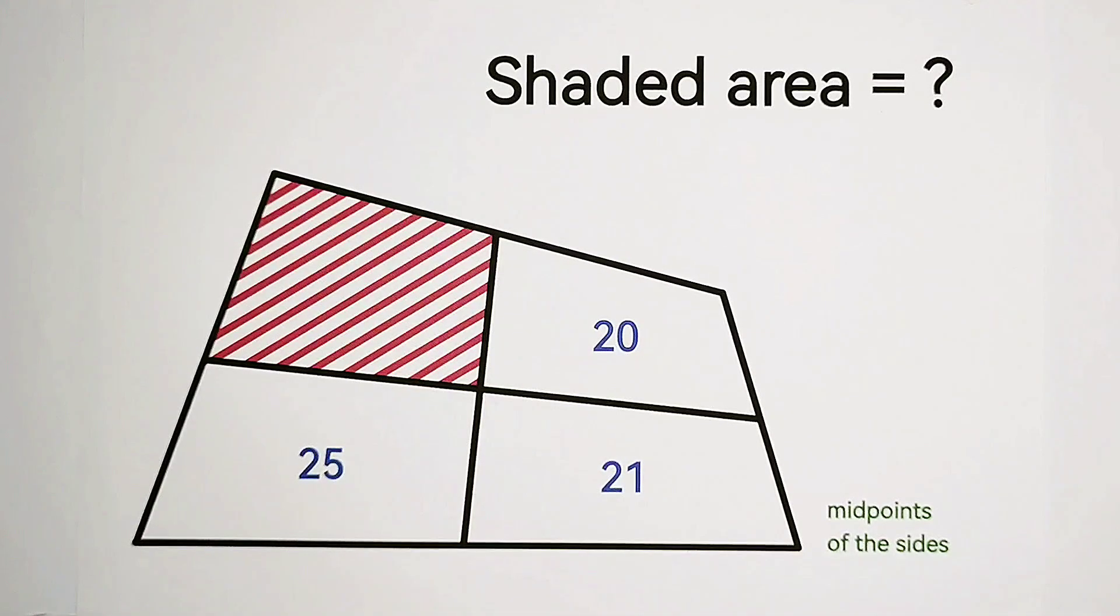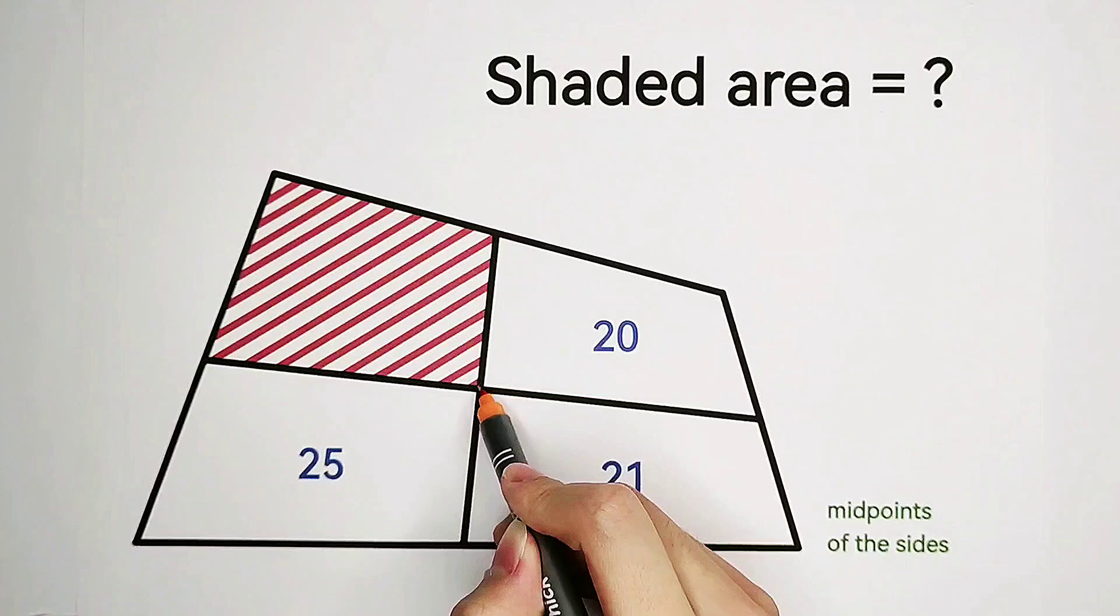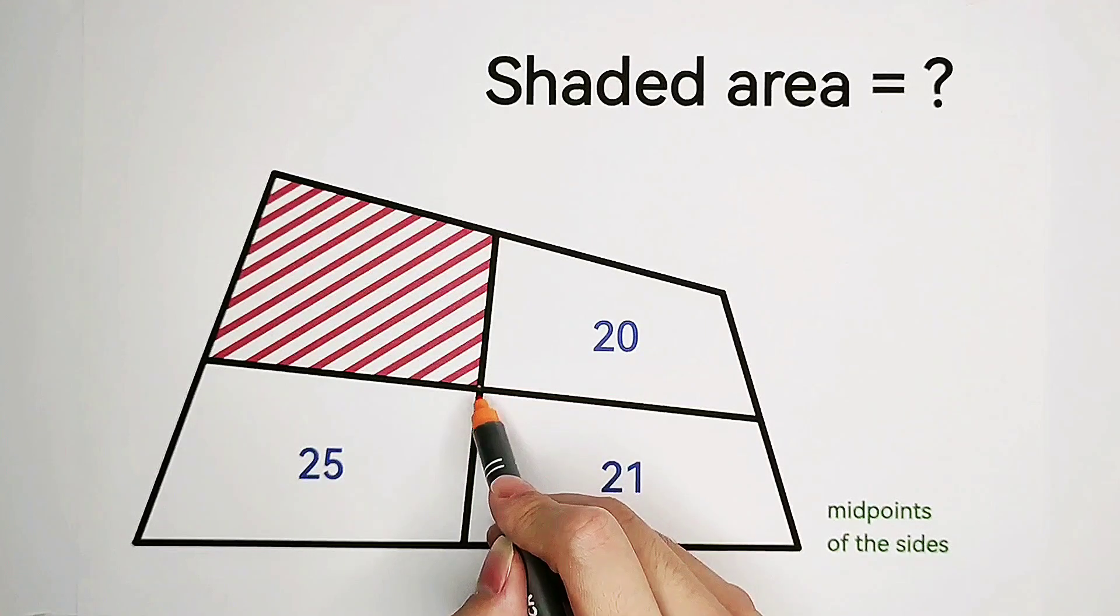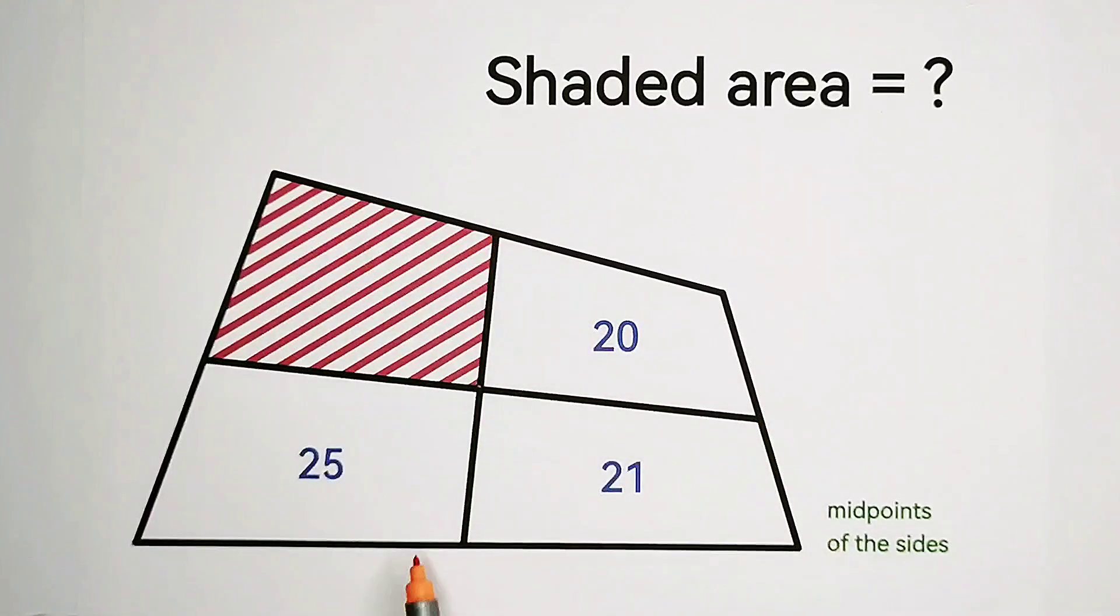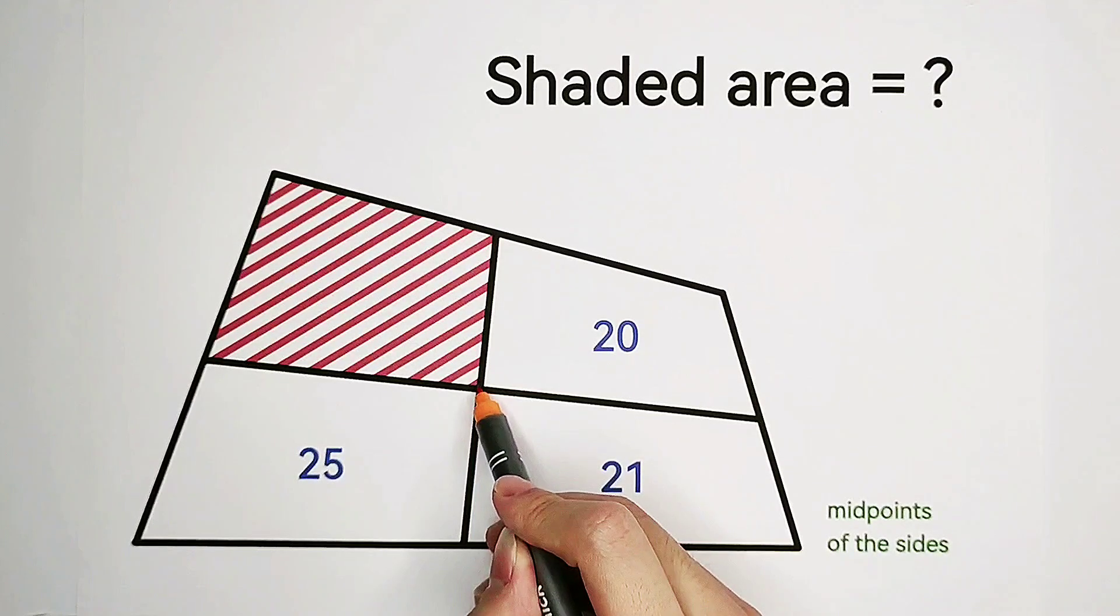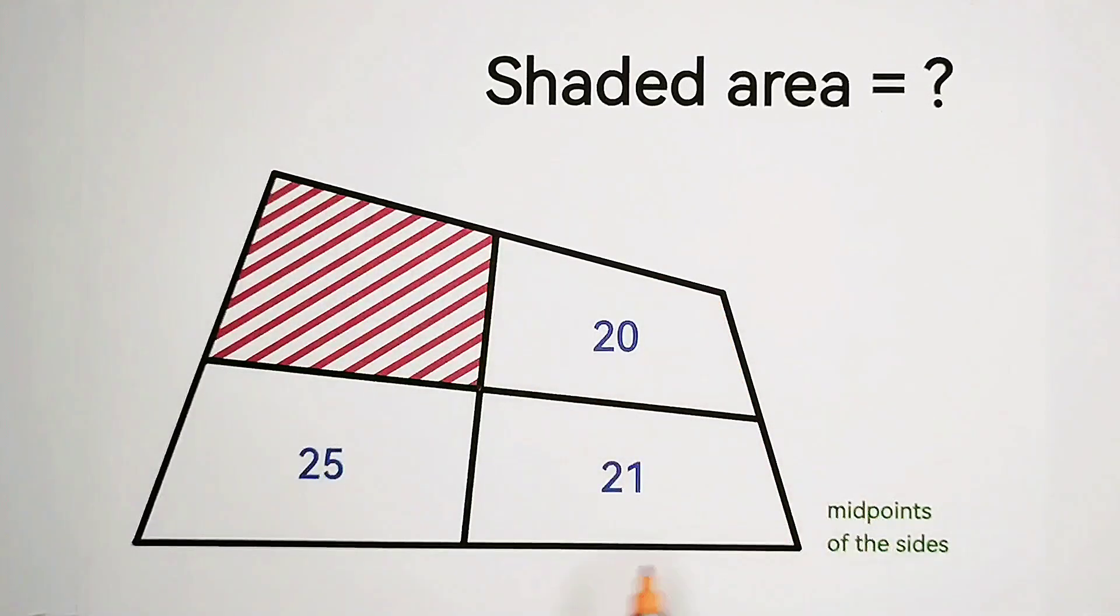Hmm, not easy. We have a trick. Now, our idea is, we have an intersection. Now, we also have four midpoints of four sides. So what we can do is connect this point, this intersection, with these four points to the four vertices of the big quadrilateral.